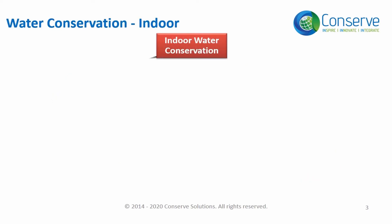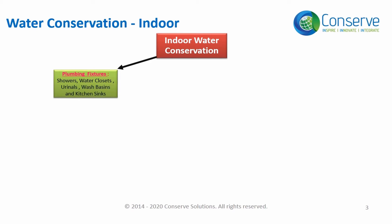Indoor water consumption is mainly associated with plumbing fixtures and appliances. Plumbing fixtures include wash basins, also called faucets, showers, kitchen sinks, urinals, and water closets. Plumbing fixtures are generally regulated by standards like the International Plumbing Code, Uniform Plumbing Code, or local plumbing codes, which specify maximum allowable flow rates.